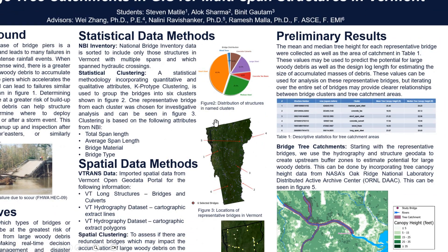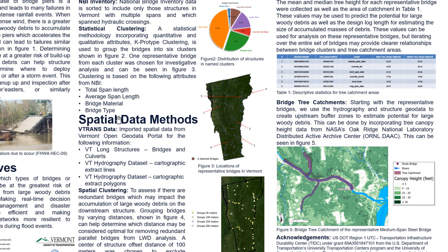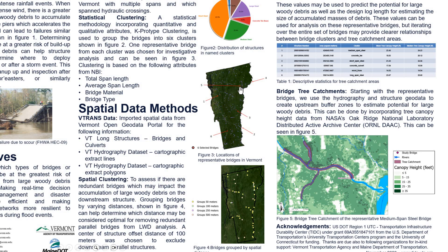After clustering the bridges, we selected one bridge from each cluster that best represents the whole cluster. These six representative bridges are shown here on the map of Vermont. We collected the structural and hydrographic data of these six bridges from FITRANCE.